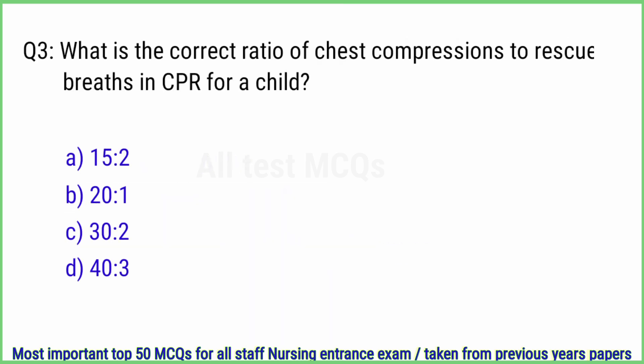Q3. What is the correct ratio of chest compressions to rescue breaths in CPR for a child? The right answer is option C, 30 to 2.